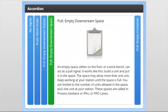Pull to an empty space. An empty space, either on the floor or a workbench, can act as a pull signal. Build a unit and put it in the space — the space may allow more than one unit. Keep working at your station until that space is full. You are limited to the number of units allowed in the space, plus one unit at your station. These spaces are called in-process Kanbans, or IPKs, or FIFO lanes.